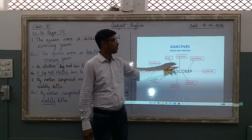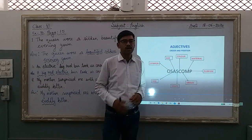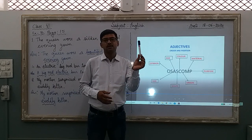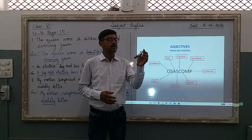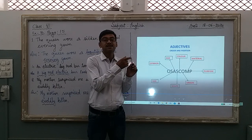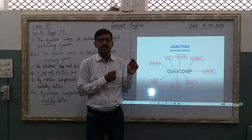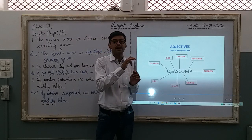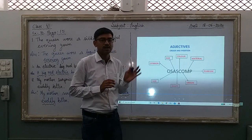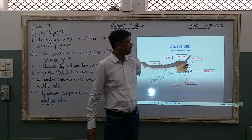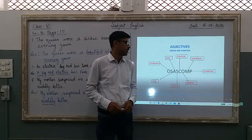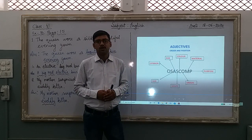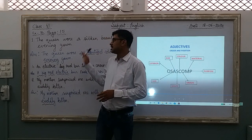Next we have M, which stands for material. For example, this is a pen in my hand. What kind of pen is this? It is a plastic pen. What material is it made out of? It is made out of plastic. So here is where we talk about material — and also purpose, for what purpose something is used.